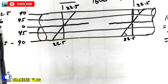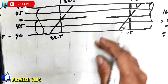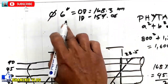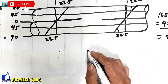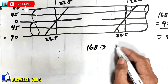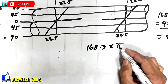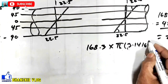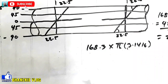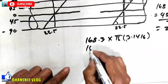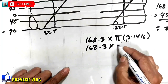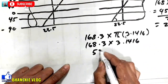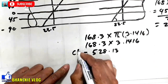Sa pagkuhan ng kanyang distance, kuhanan nyo muna yung kanyang circumference o kung ilan yung circumference nitong 168 na dimension sa ating outside diameter sa ating 6 inch. So, sa pagkuhan ng circumference, yung ating 168.3 i-times nyo lang yan sa ating pi — 3.1416 yan yung constant ng ating pi sa pagkuhan ng ating circumference. I-calculate natin yung ating 168.3 times natin 3.1416. So, yung ating answer dito is 528.13 circumference ng ating pipe.